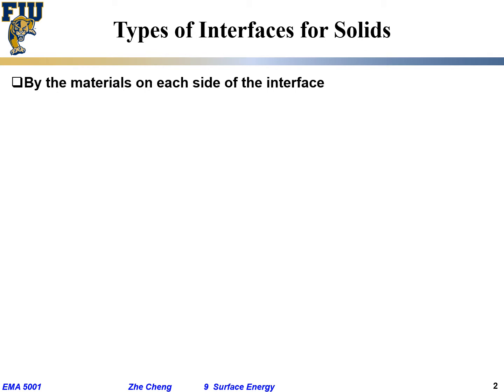Before we go in there, let's first talk about the different types of interfaces within solids. We can classify them by the material on each side of the interface. An interface is a boundary that separates two parts. If we have the so-called surface — what is a surface? It's the boundary between what's inside a material and what is the gas or vacuum.